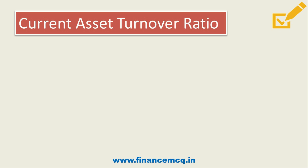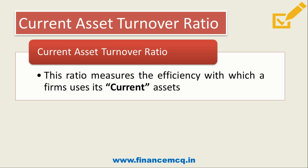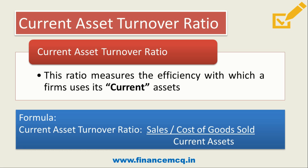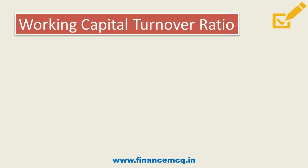The current asset turnover ratio measures the efficiency with which a firm uses its current assets. Just as earlier ratios focused on total assets, fixed assets, and net assets, this ratio focuses on current assets. It is calculated as sales or cost of goods sold upon current assets.